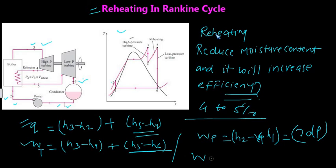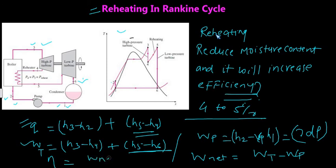Net work is turbine work minus pump work. Efficiency is W_net divided by heat supply. This concludes the basic explanation of reheating in the Rankine cycle. I hope this lecture helps you better understand the procedure and purpose of reheating. Thank you very much.